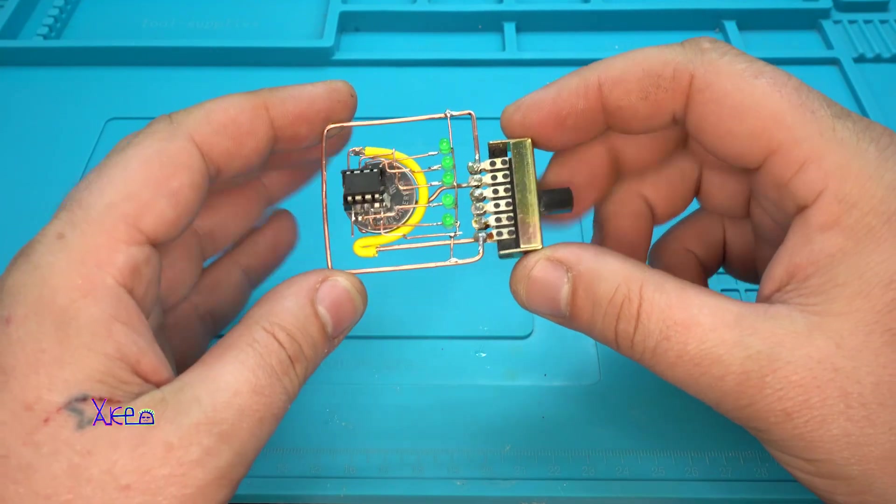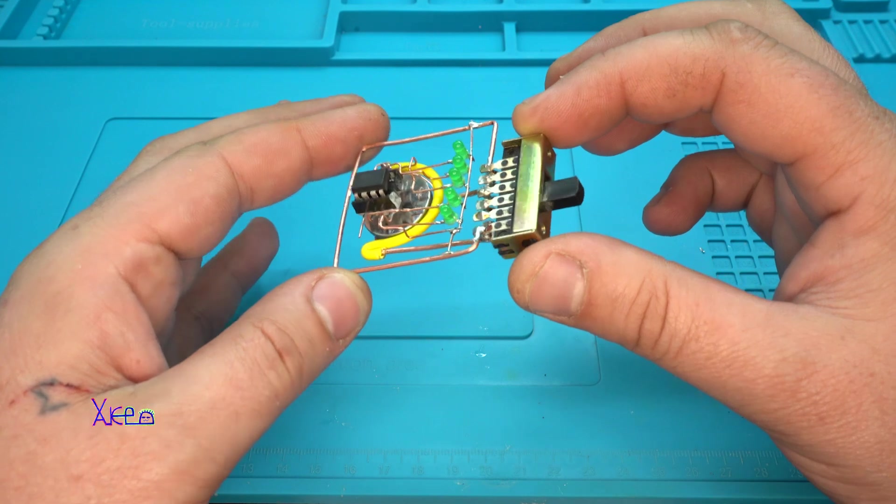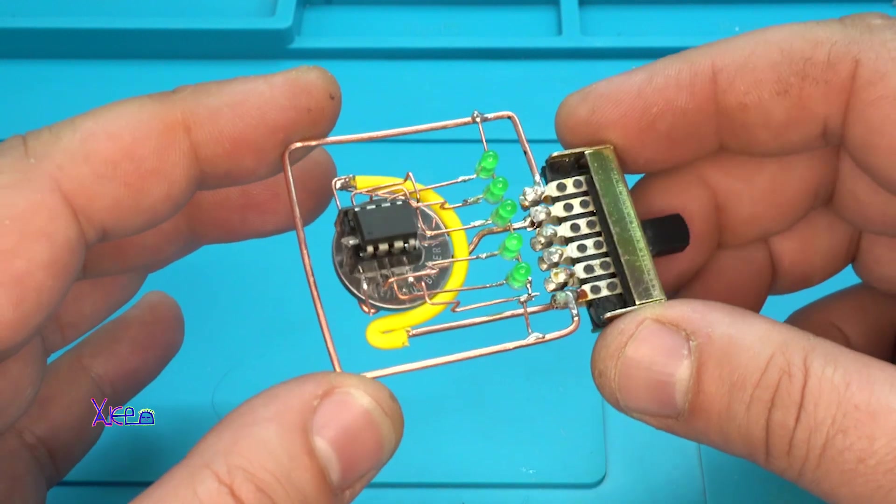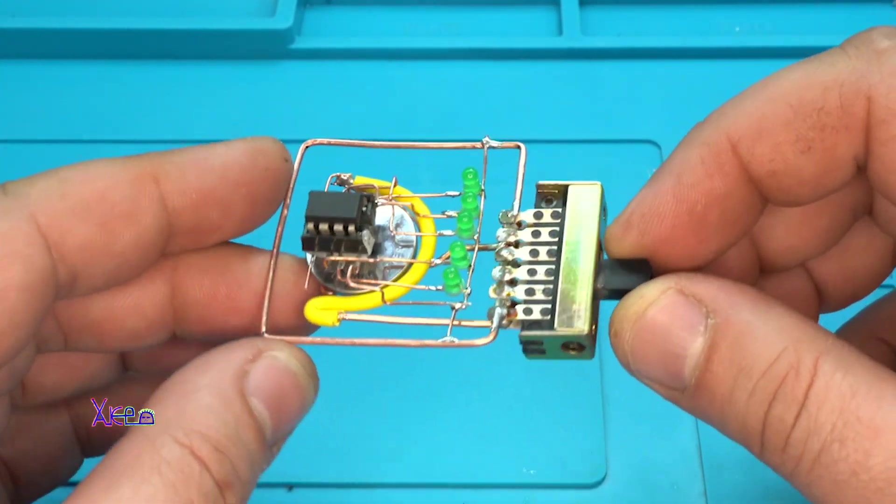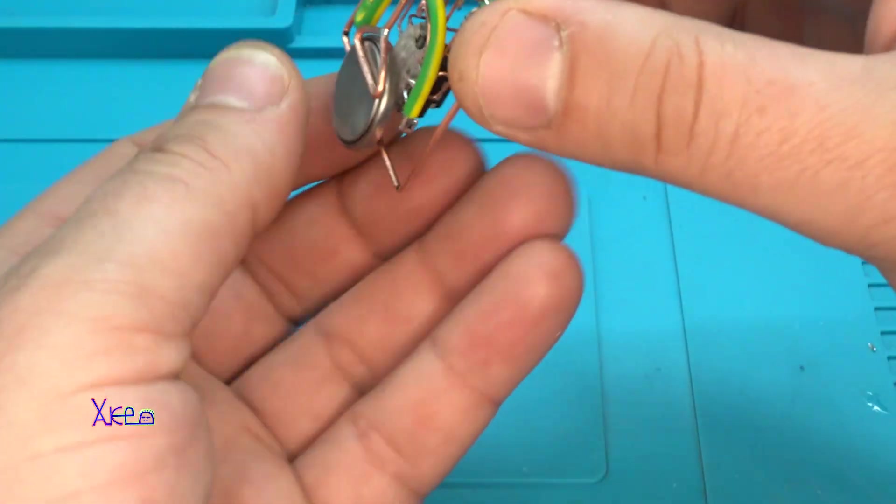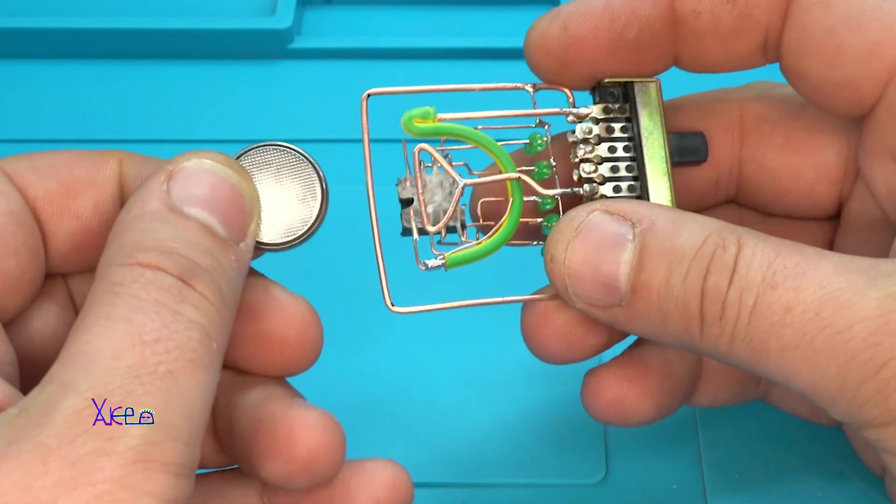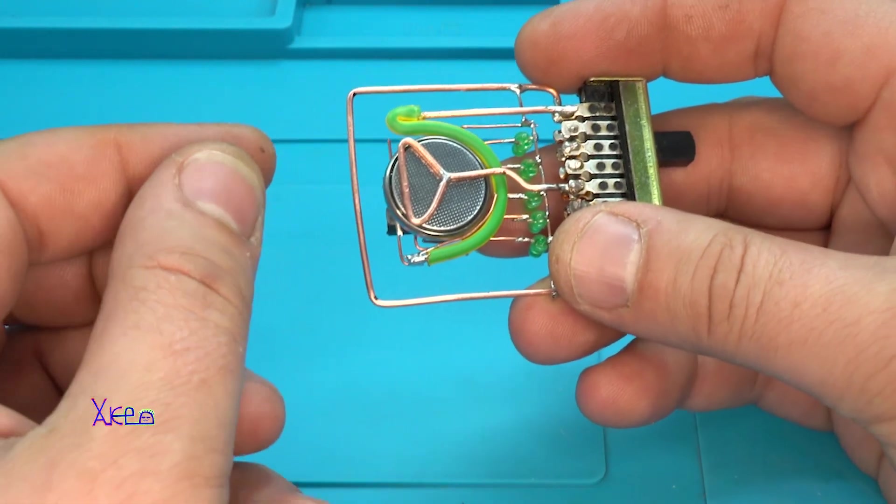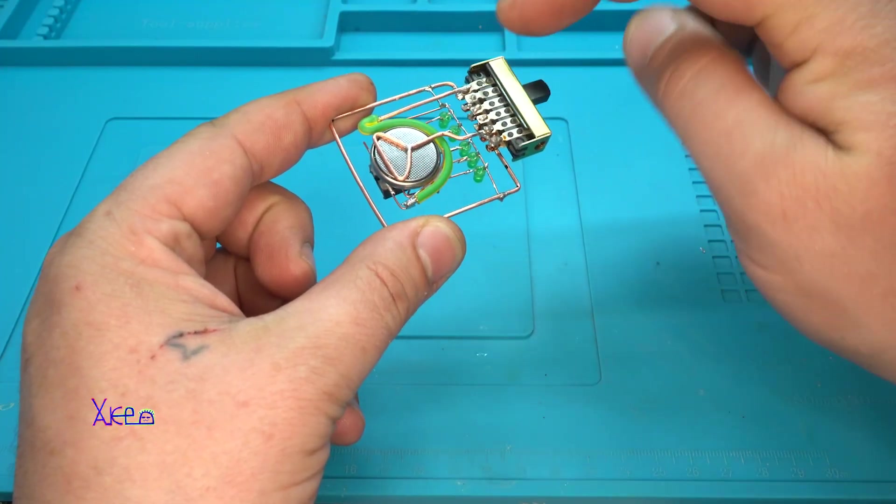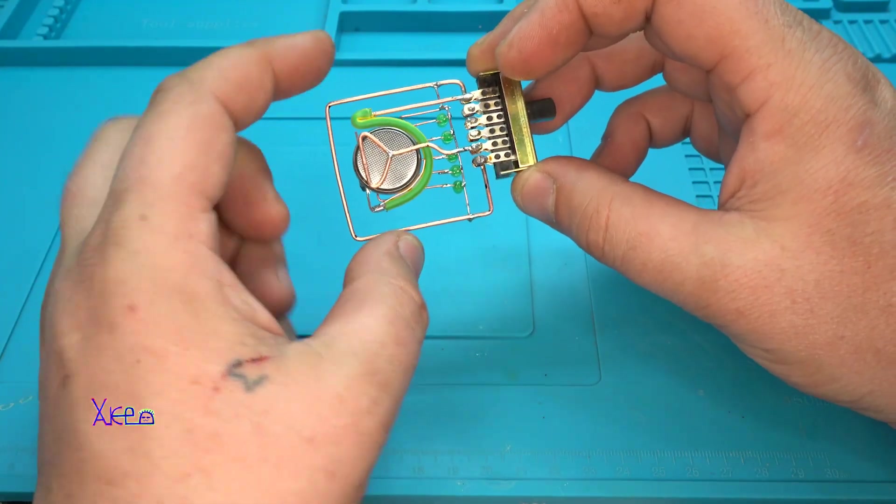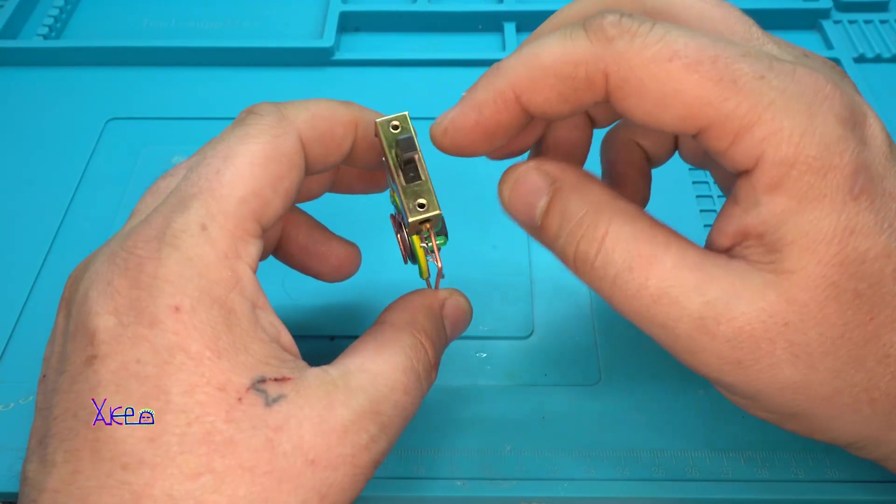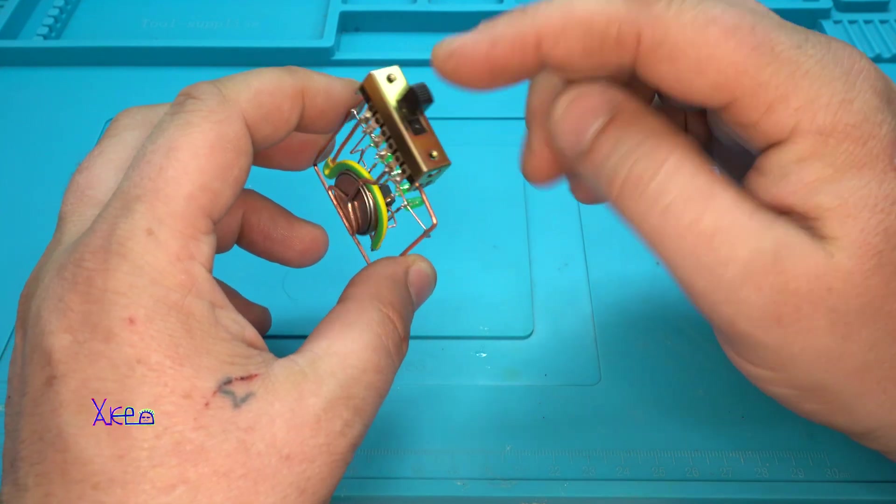And here it is, the finished skeleton LED chaser, and it looks awesome. The battery can be removed like this and placed back. I made a very nice holder for the battery. This is the basic square frame. I don't know why I used a big switch but I like it.